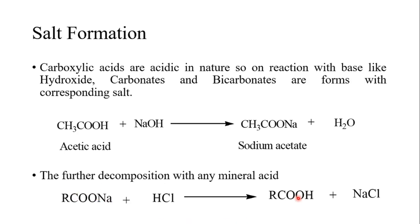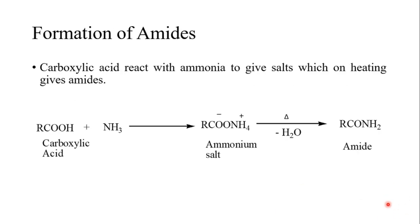The second reaction is the formation of amides. Carboxylic acid reacts with ammonia to give a salt, which on heating gives the amide. First we take one carboxylic acid plus ammonia, and both react to form an ammonium salt. The ammonium salt on further heating loses one water molecule to give the formation of one amide molecule.